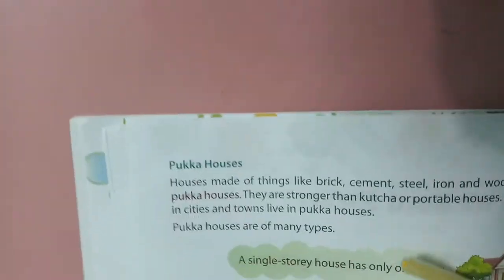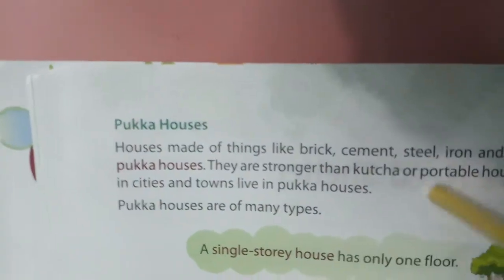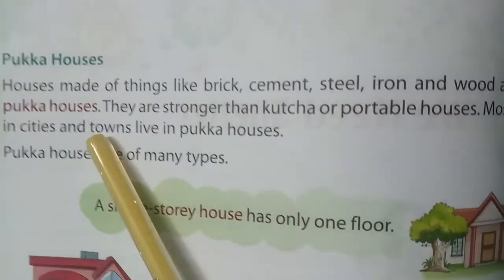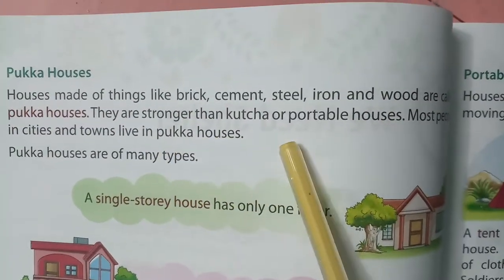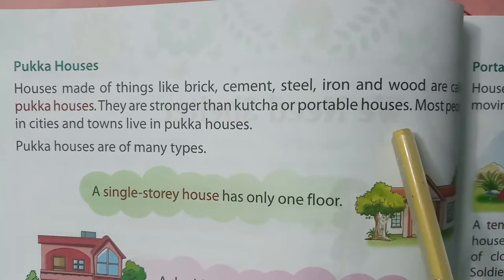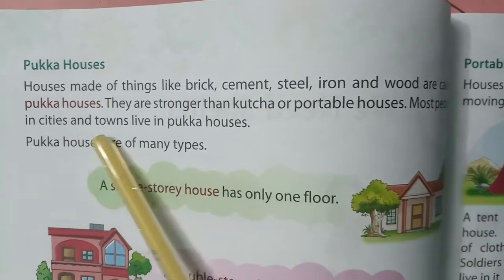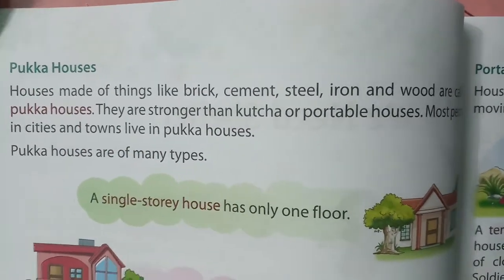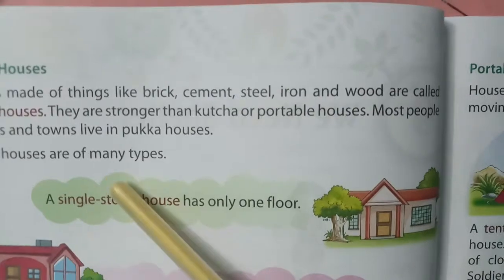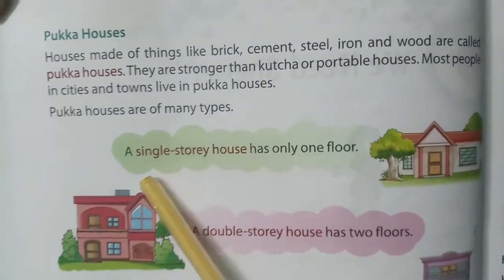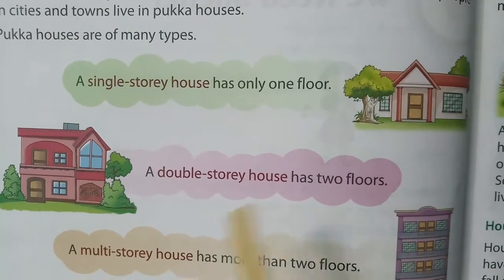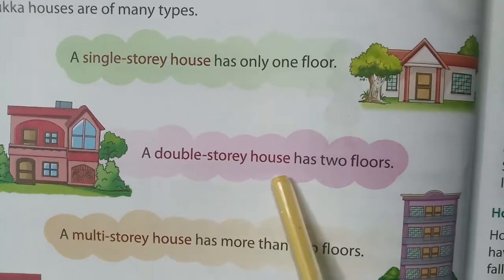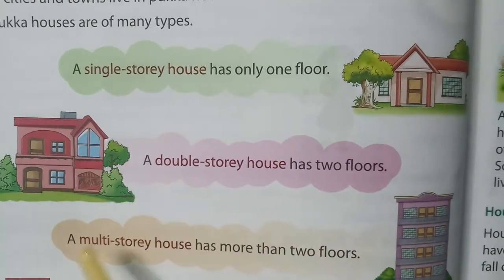Paka houses — houses made of things like brick, cement, steel, iron, and wood are called paka houses. They are stronger than kaccha houses. Most people in cities and towns live in paka houses. Paka houses are of many types. A single storey house has only one floor. A double storey house has two floors.